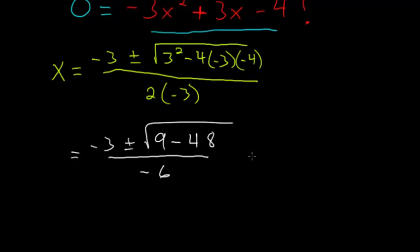And we can again simplify this as -3 plus or minus the square root of... 9 minus 48 is -39, divided by -6.